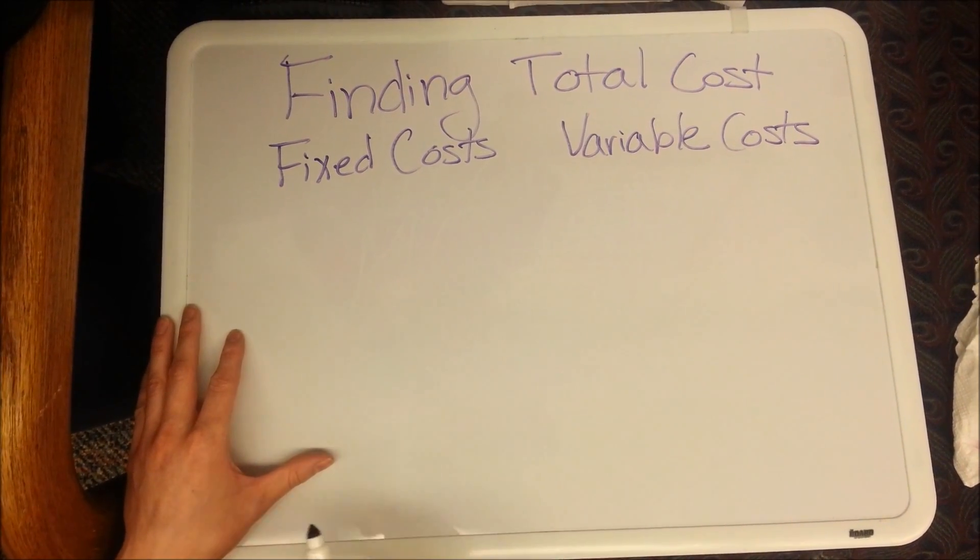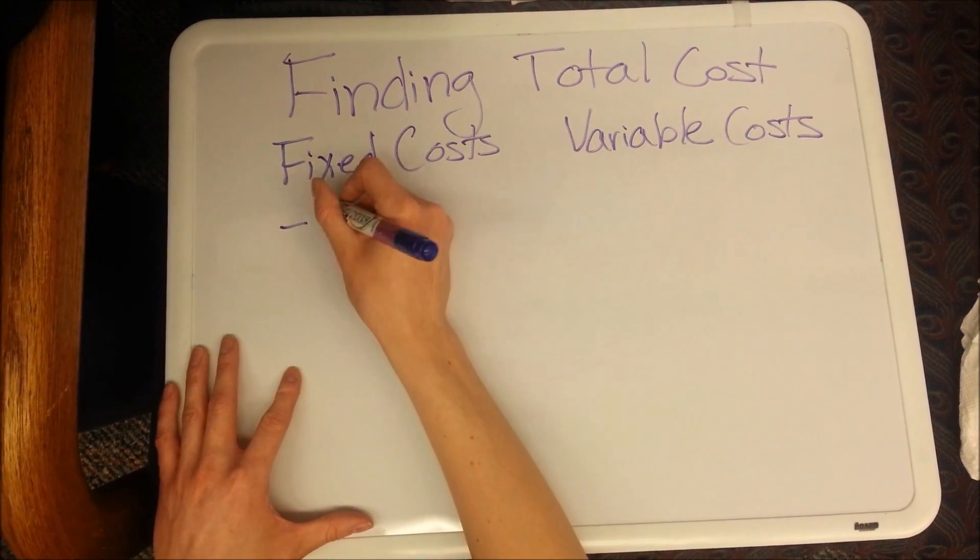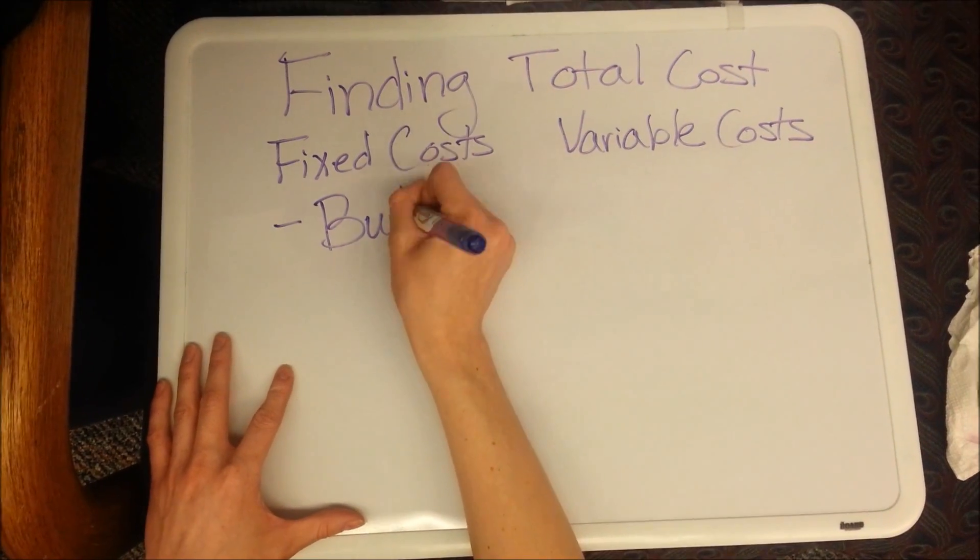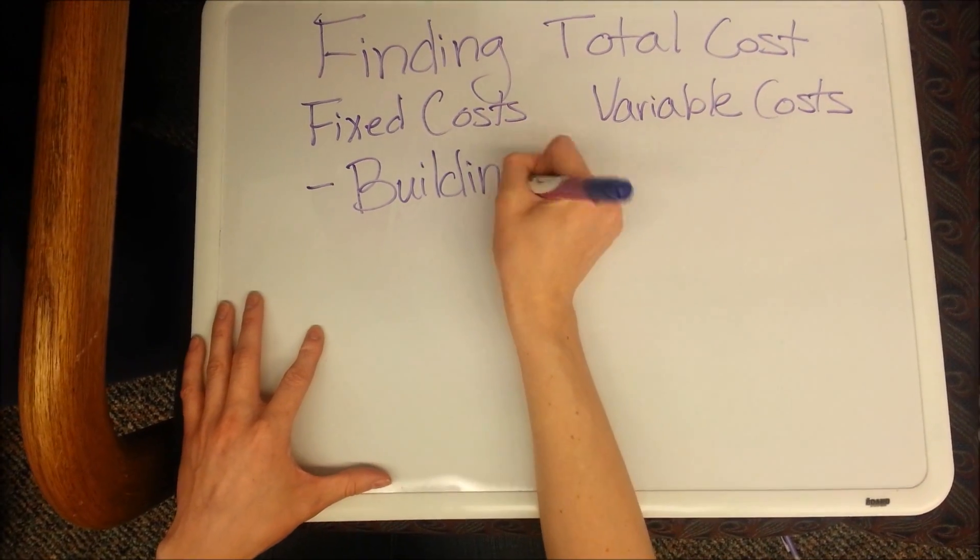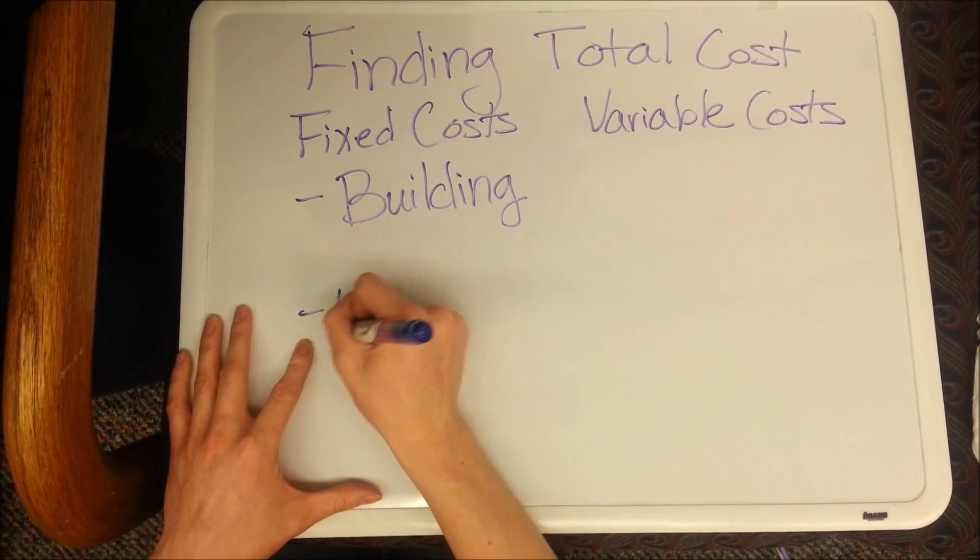Fixed costs are what needs to be paid regardless of the quantity of the item being produced. Examples of this could be the mortgage on a building or the electricity needed to run the lights.